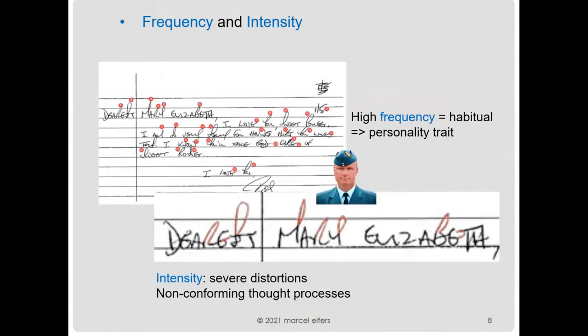Here we also see the enormous intensity of the distortions. Intensity means how severe the distortions are — how far they are removed from accepted handwriting standards. So we have high frequency and severe distortions, and that suggests non-conforming thought processes.